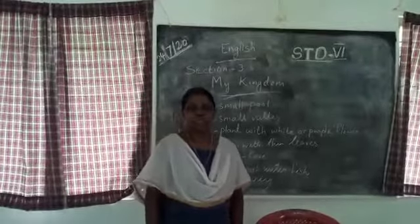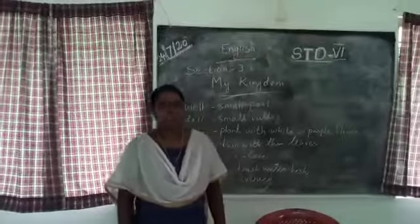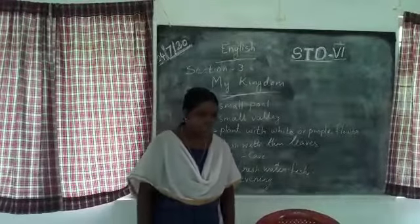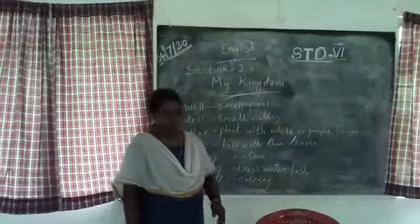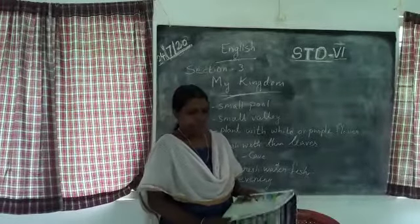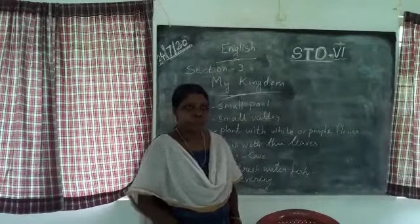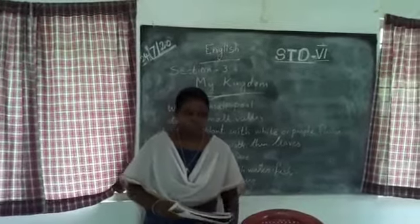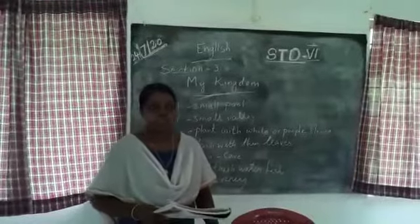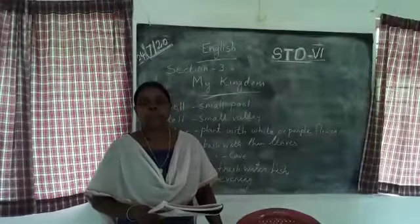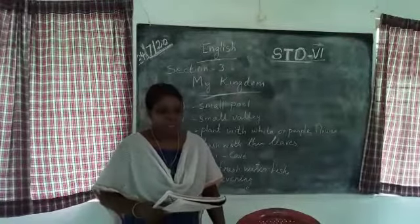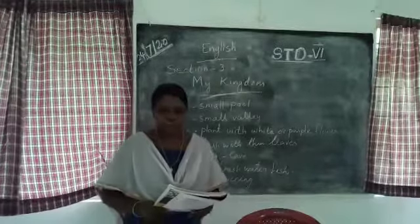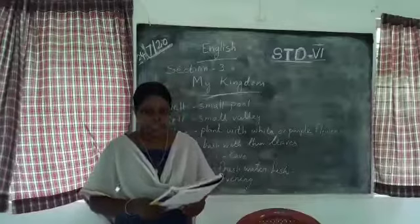Today I am going to teach you English of Standard 6, Section 3. It is a new poem. The poem is titled 'My Kingdom' and it was written by R.L. Stevenson. Today we are talking about this new poem written by R.L. Stevenson.